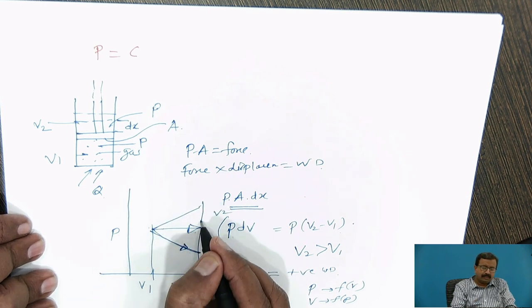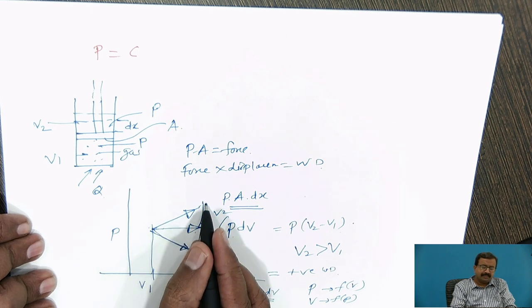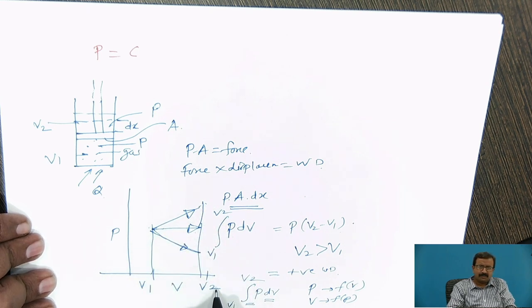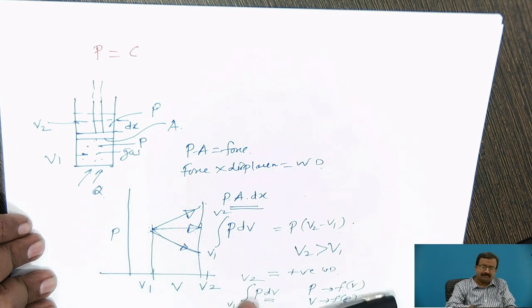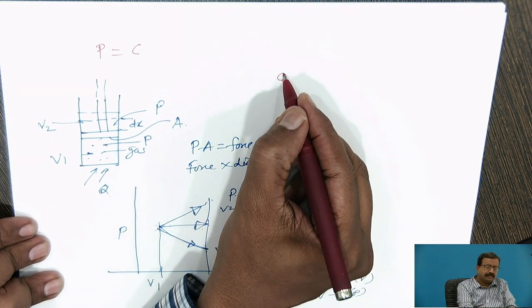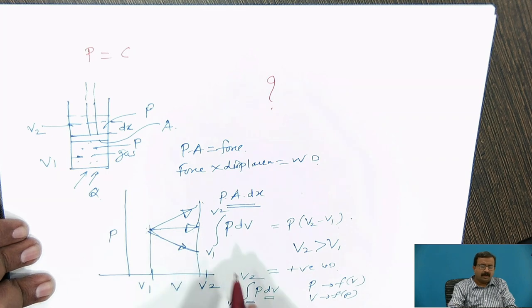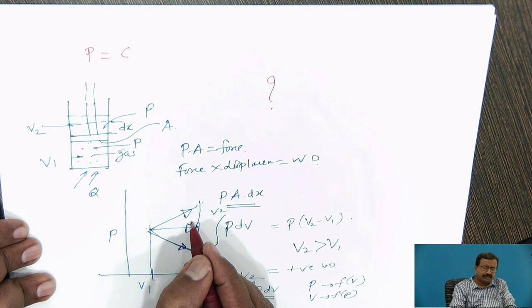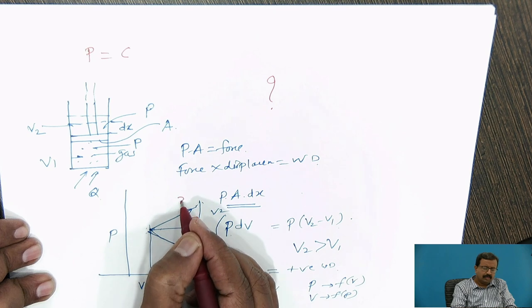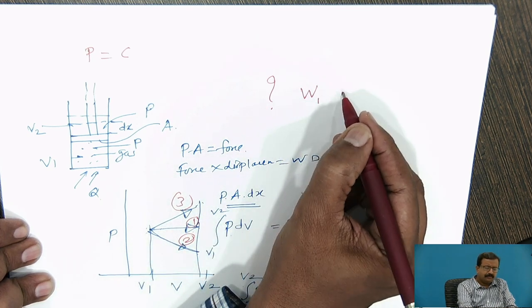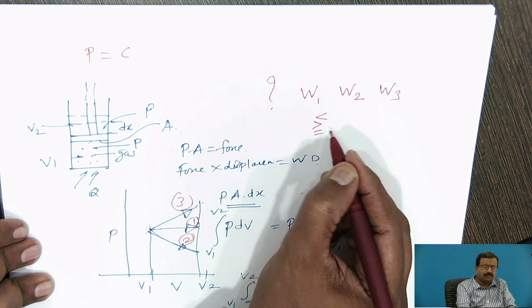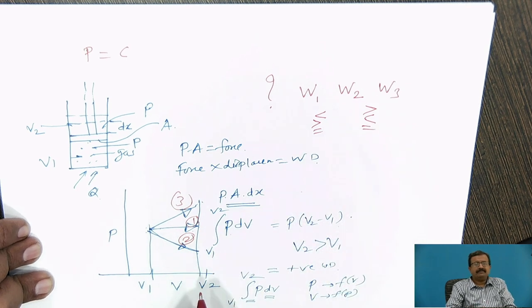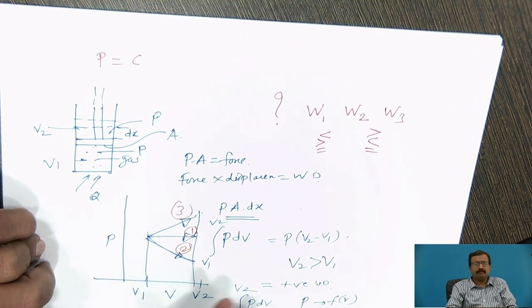It can go in this way also. So there is an increase in pressure, and work done is positive. There is a decrease in pressure, and work done is positive. And pressure remaining constant, there is a positive work. Now my question, simple question to you is, out of these three processes, out of these three processes, say one, two, and three, work done for one, work done for two, and work done by three, you put the less than equal to signs in between. That is your task that you have to complete.